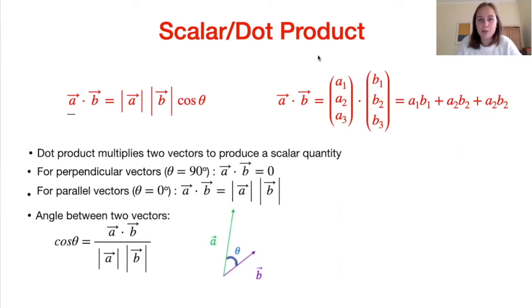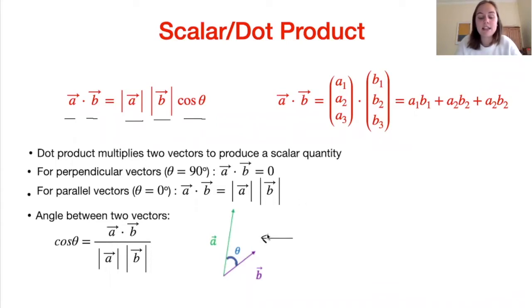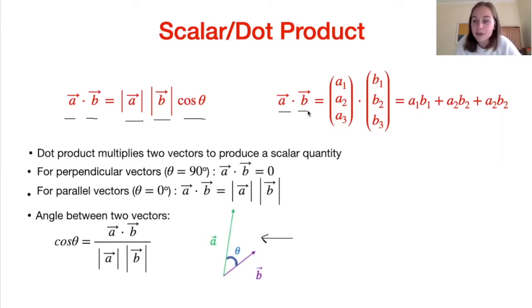There are two ways to compute the scalar or dot product, shown in the two red formulas. First, a · b equals the magnitude of a times the magnitude of b times cos θ, where θ is the angle between the two vectors. Another way: a · b equals the sum of the products of corresponding components — the x component of a times the x component of b, plus the y component of a times the y component of b, plus the z component of a times the z component of b.